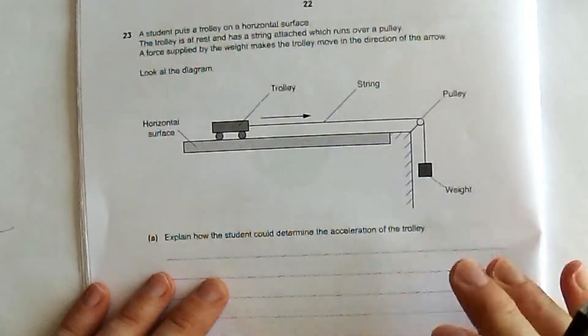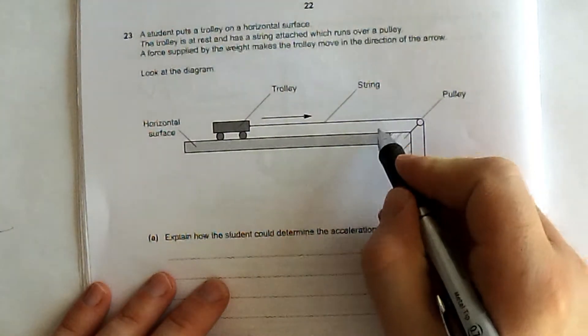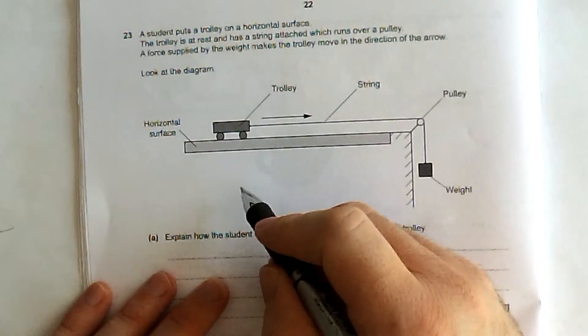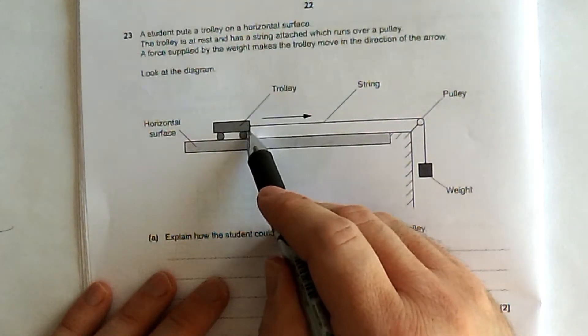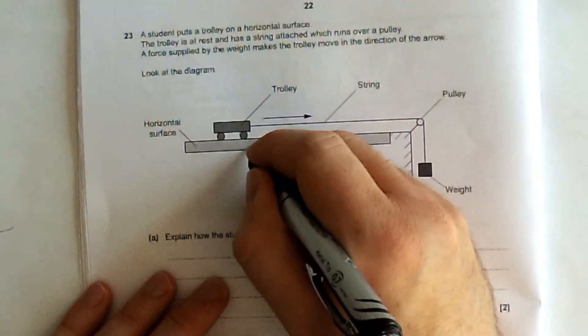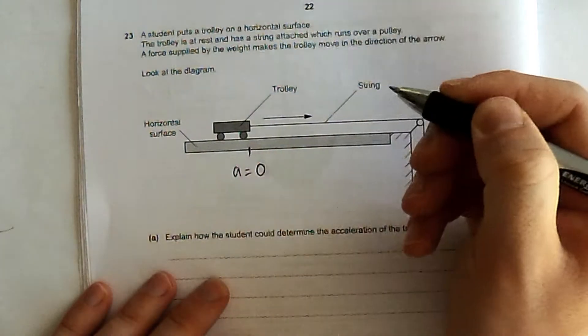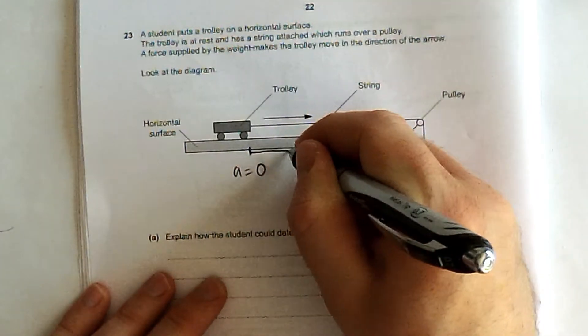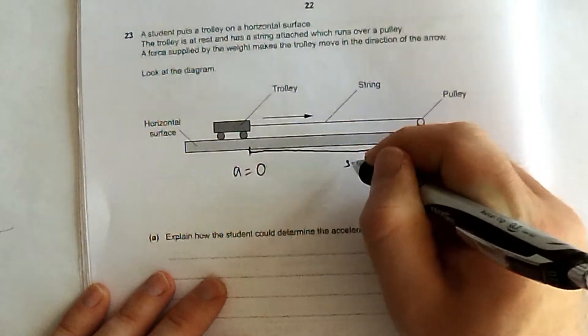That's not the way that I would do that in practice because it would be very hard to measure an instantaneous speed at two points. You can always use, however, the initial speed, U, as being zero. And I would just measure distance, S here.